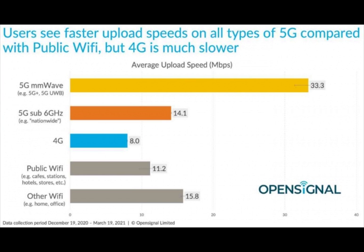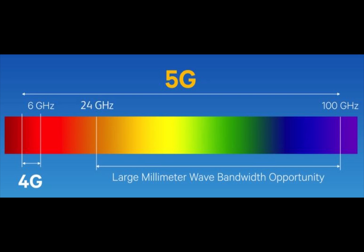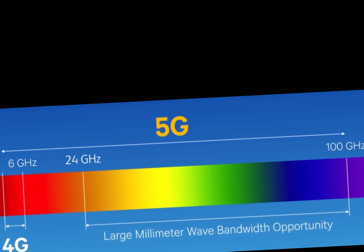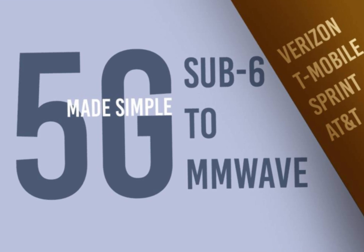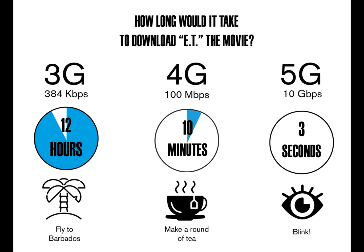mm Wave offers the fastest speed but has quite a limited range, while sub-6GHz 5G has better range but speeds closer to 4G LTE. Only the iPhone 12, 13, and 14 support both mm Wave and sub-6GHz 5G service. However, one downside to 5G is it uses more battery than LTE — some tests have shown the iPhone lasting 1 to 2.5 hours longer when sticking with 4G LTE versus the 5G default setting.